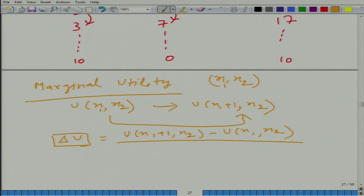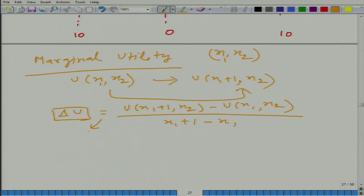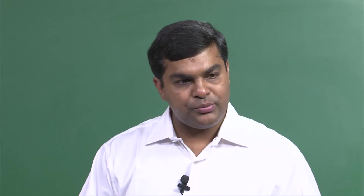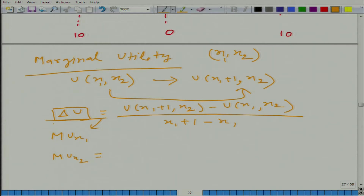In the denominator we have 1, which we can write as x1 plus 1 minus x1. This is basically defined as marginal utility with respect to x1 — delta u upon delta x1. This is the marginal utility with respect to x1. I will come back to the calculus definition we gave earlier.